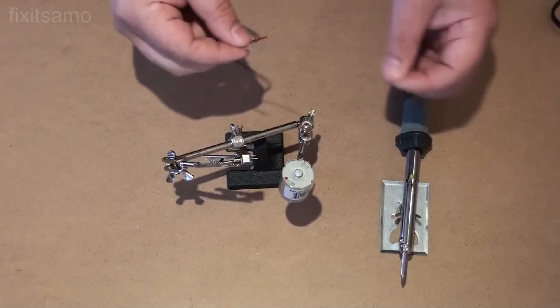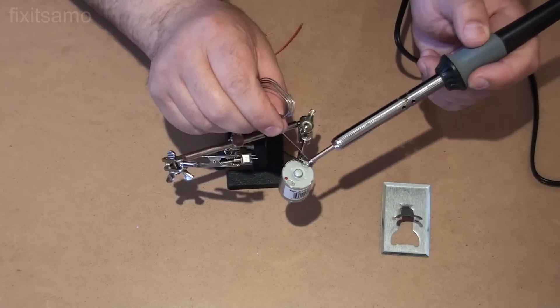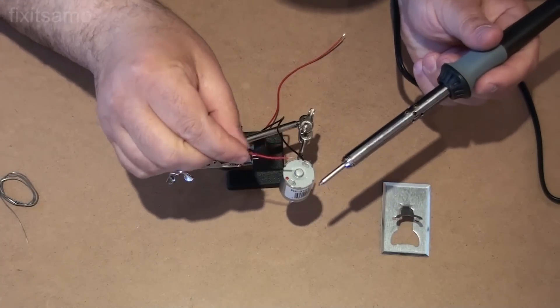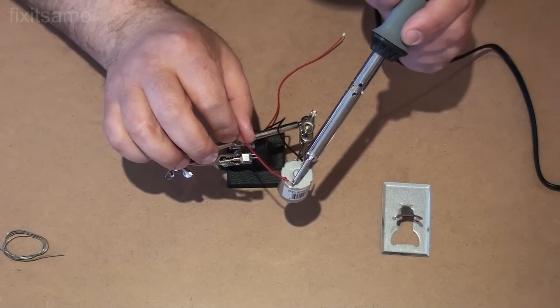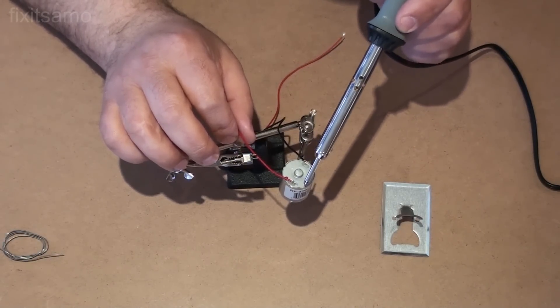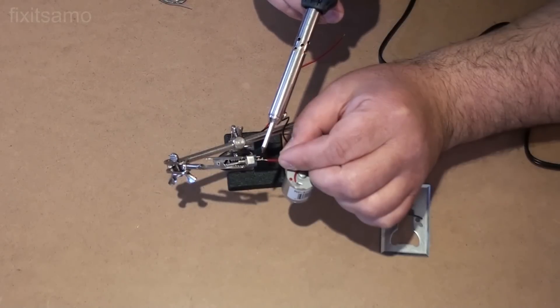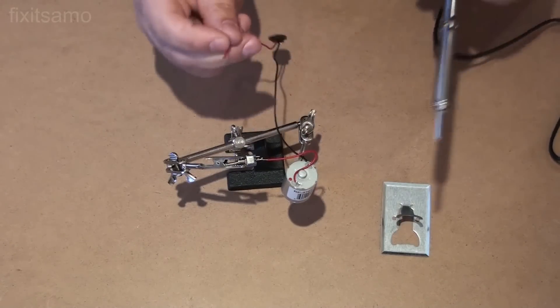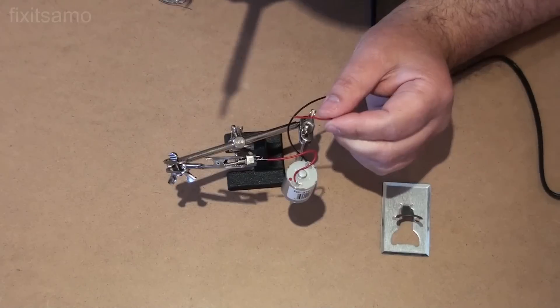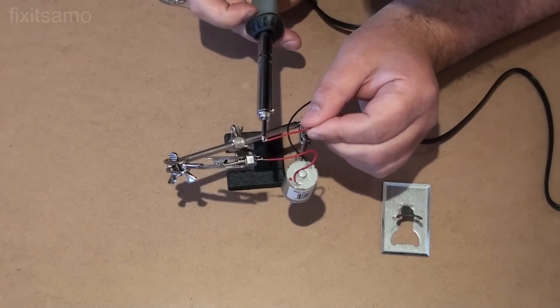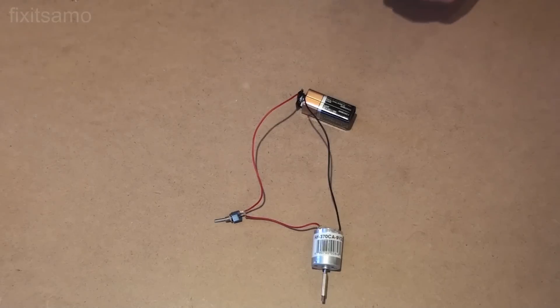First we're gonna connect the black wire. Now we're gonna connect the red wire to the on-off switch. And now the red wire that comes from the 9-volt connection, we're gonna connect it right here. There we go, now that my connection is ready it's time to install the motor in its place.